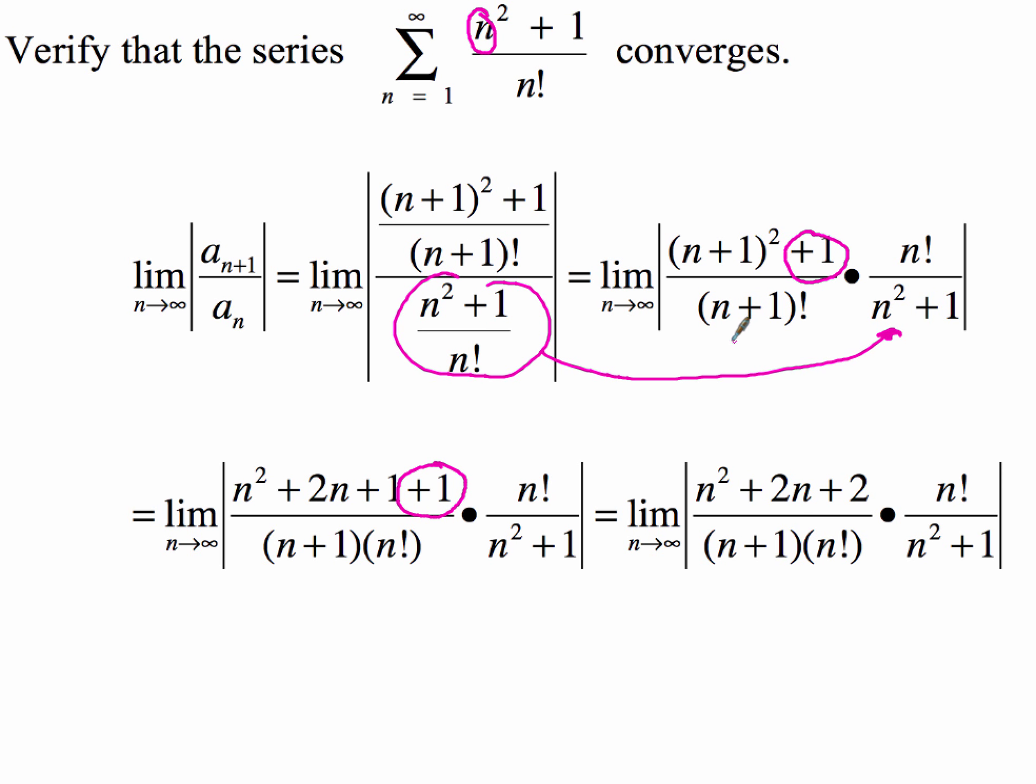And then we have n plus 1 times n factorial in the denominator. Now where did that come from is where a lot of people ask. So when you have n plus 1 factorial, remember, if you start off with n, the term after it is going to be n plus 1, and the term after that is going to be n plus 2, and so on. The term before n, of course, would be n minus 1. So that's where our denominator, that's why we can change it since it's n plus 1 factorial. So this is where we started, and then we're going to rewrite that to just be n plus 1 times n factorial.